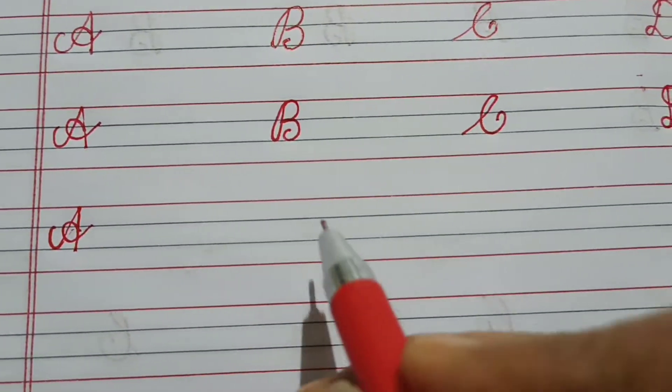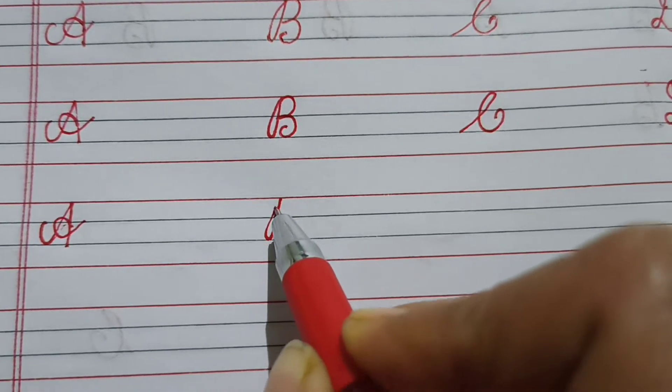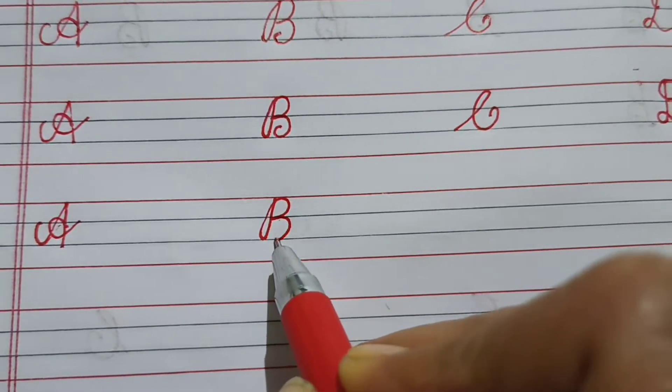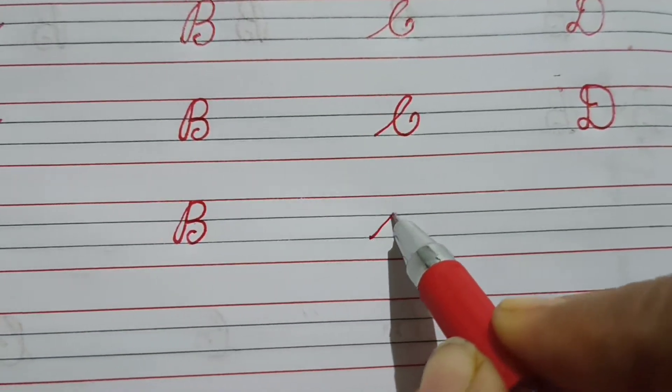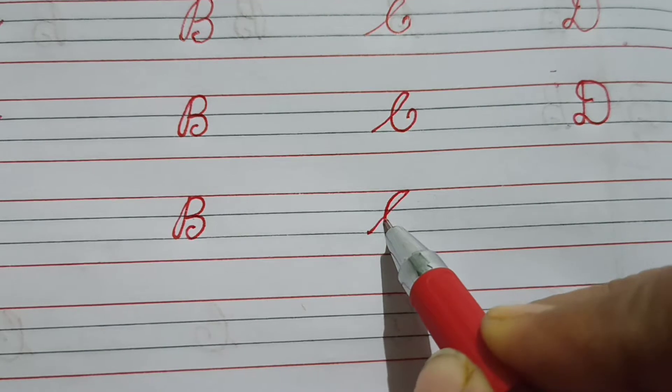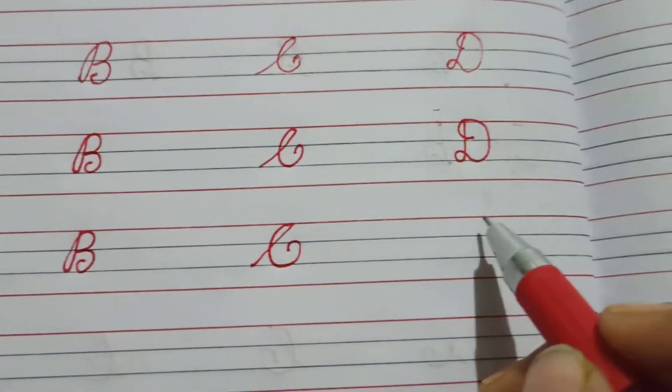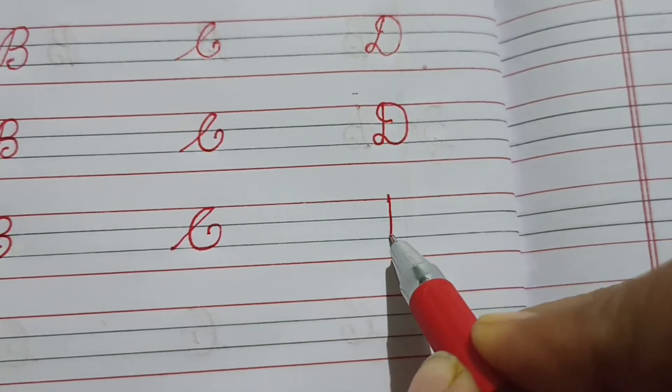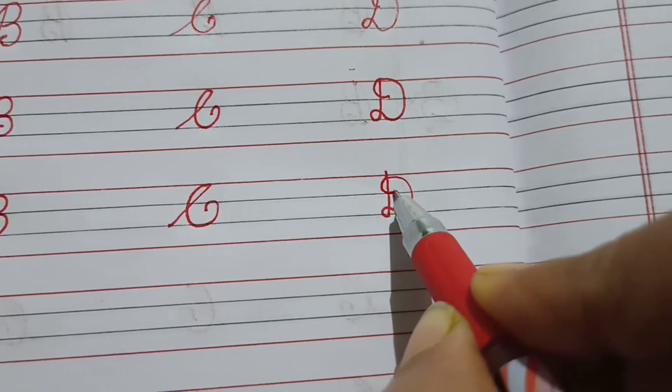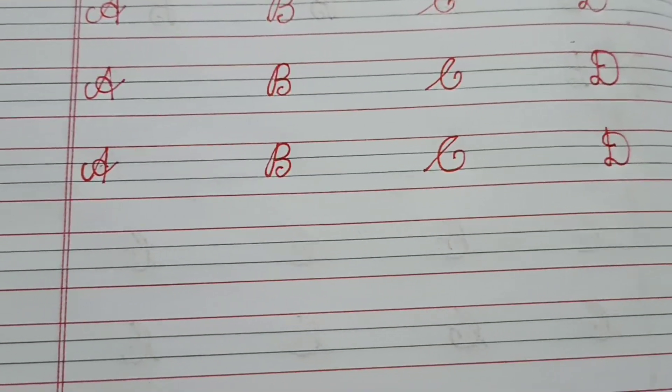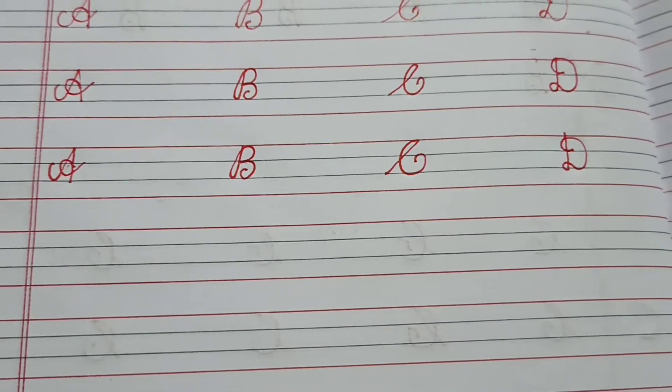A, B, C, and this is D. A, B, C, D. So write this A, B, C, D in your notebook.